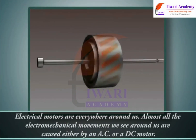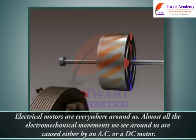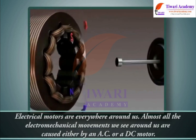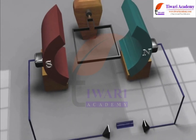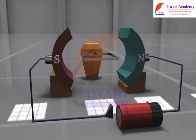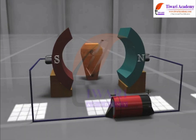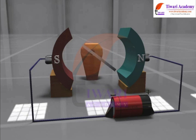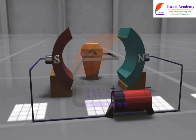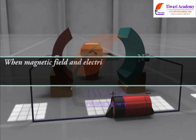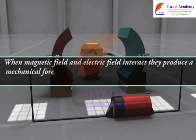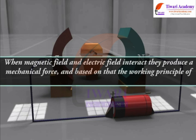Electrical motors are everywhere around us — almost all electromechanical movements we see are caused either by an AC or a DC motor. The motor works on the principle that when a current-carrying conductor is placed in a magnetic field, it experiences a torque and tends to move; this is known as motoring action. If the direction of electric current in the wire is reversed, the direction of rotation also reverses. When magnetic field and electric field interact, they produce a mechanical force, and based on that, the working principle of a DC motor is established.